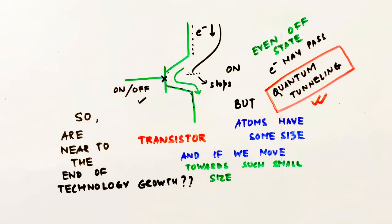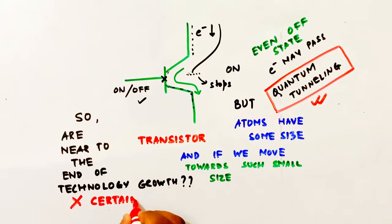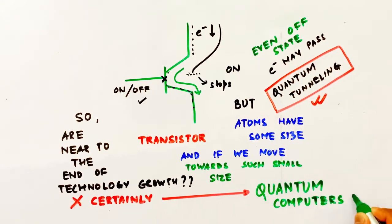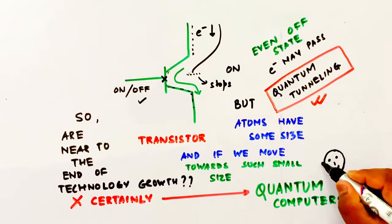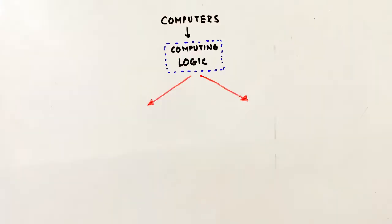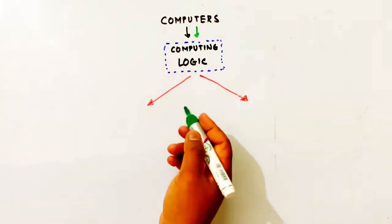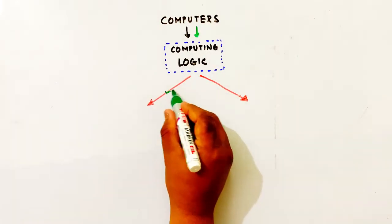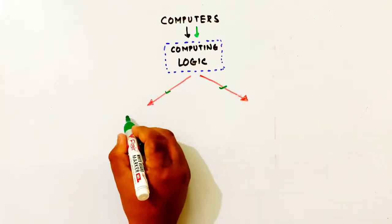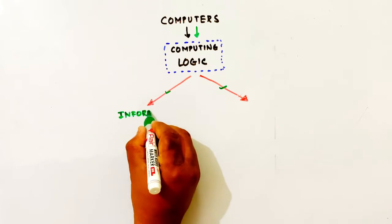Knowing quantum tunneling, we are not able to shrink transistors further. Can we still solve this? Certainly no — not with classical technology. Why not? Because of quantum computers. Quantum computers are our technology solution. Why do we need quantum computers? Computing logic depends on our data — information, data, processing.